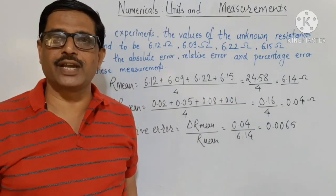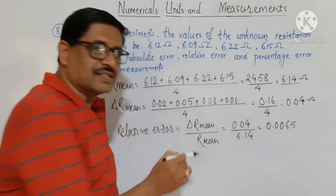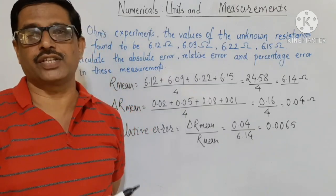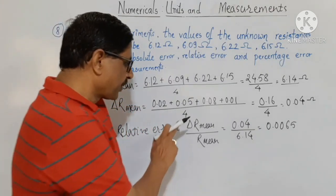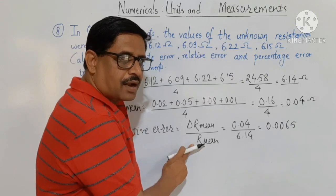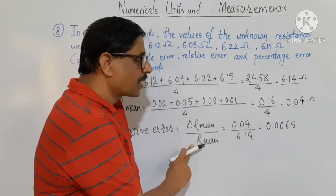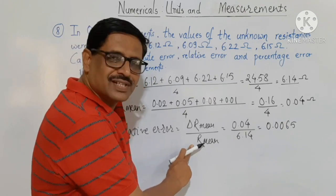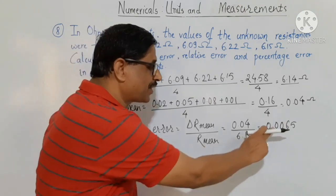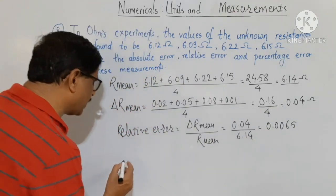Relative error is the ratio of two similar quantities, therefore it has no unit. Next, we find the percentage error in the measurement.